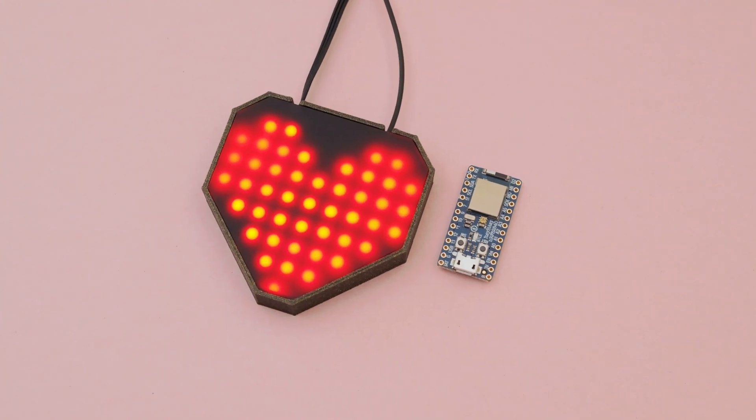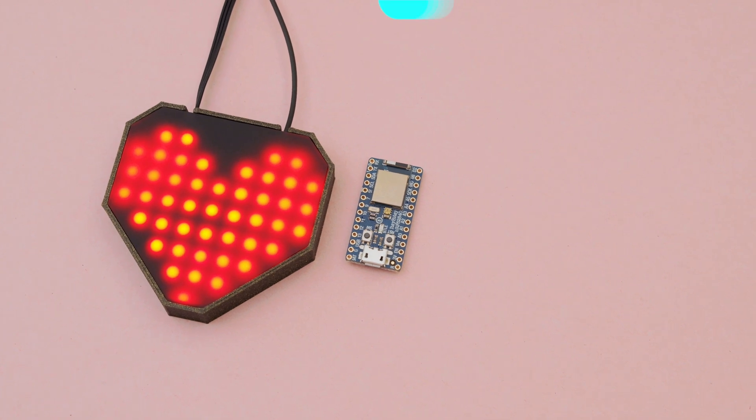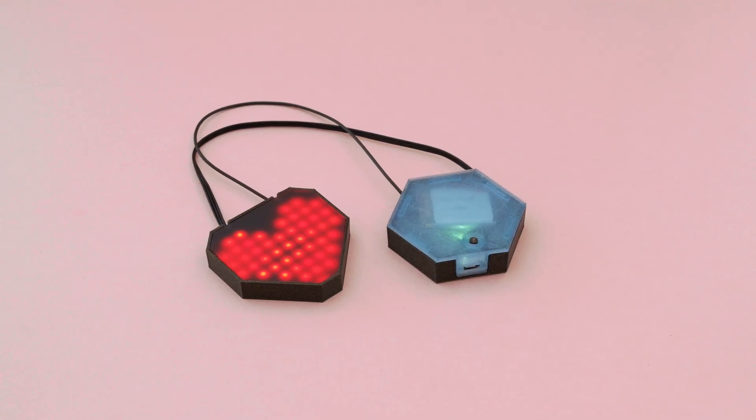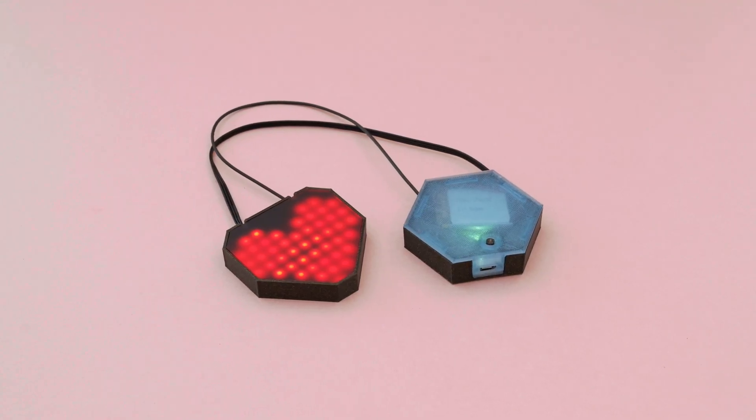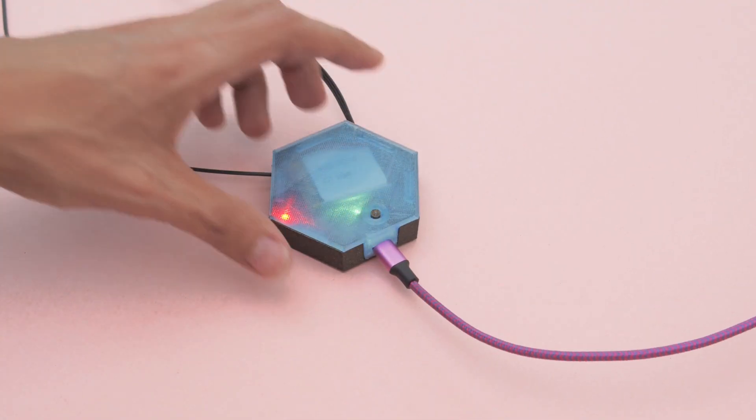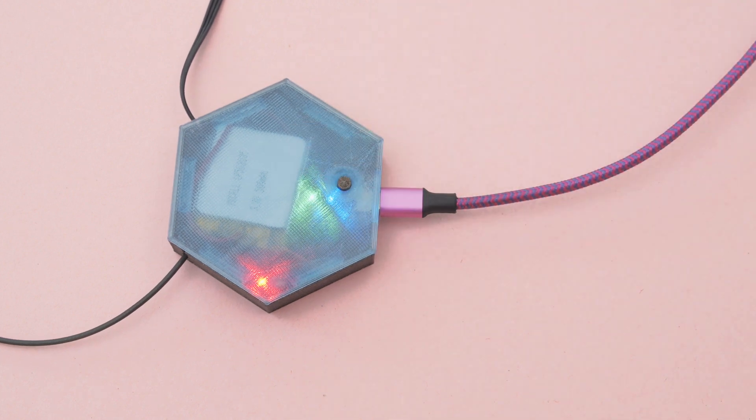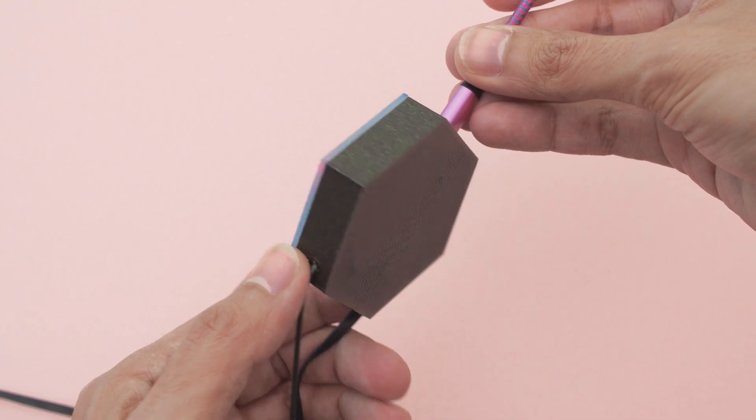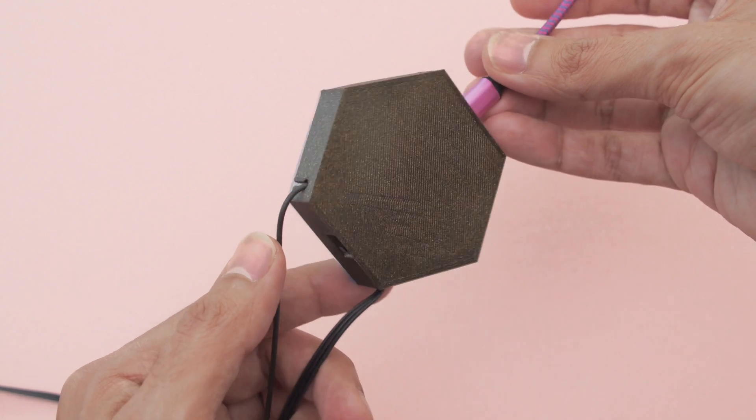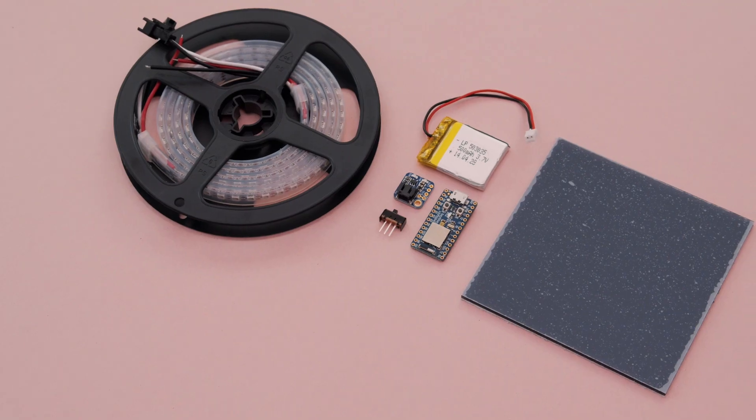With the Itsy Bitsy nRF52840, you can easily add BLE to your wearable projects. The board and battery are housed in a separate 3D printed case. We also added a LiPo backpack so you can recharge the battery over USB. A little 3D printed button lets you trigger the reset so you can easily update the firmware. We think this case will work really nice for your next wearable project.